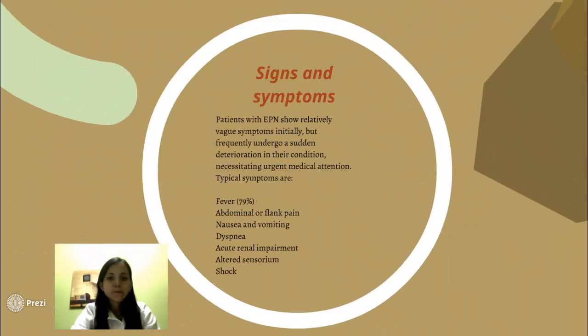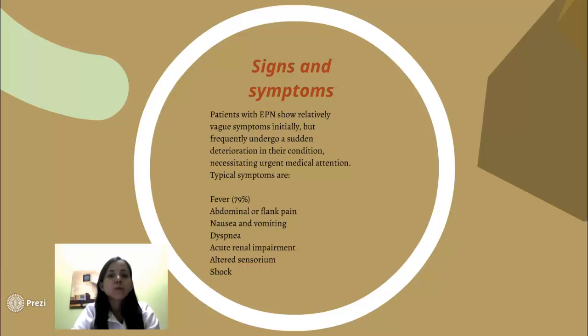Signs and symptoms: Patients with EPN show variable severity initially, but show rapid deterioration in their condition, necessitating urgent medical attention. Typical symptoms are fever in 70-79% of patients, abdominal or flank pain, nausea and vomiting, dysuria, acute renal impairment, altered consciousness, and shock.